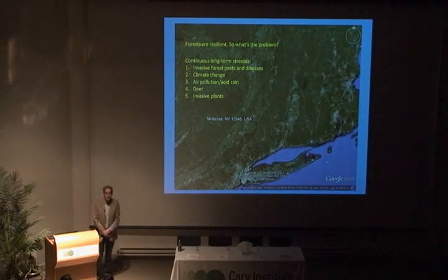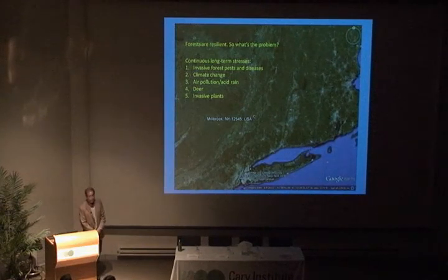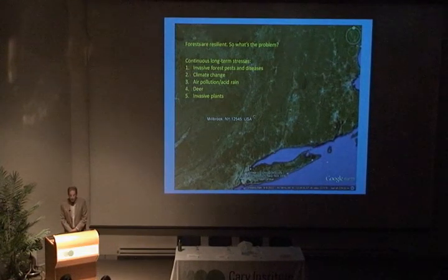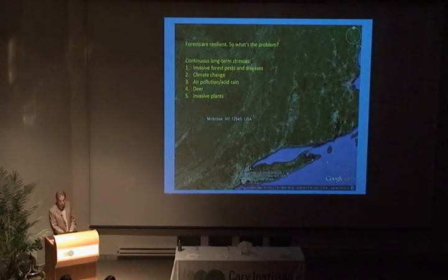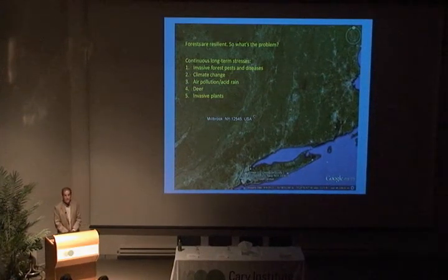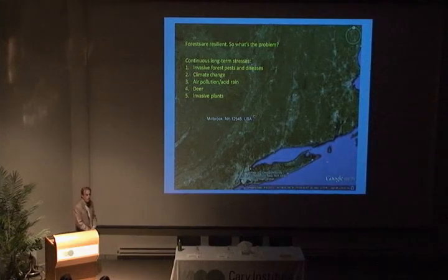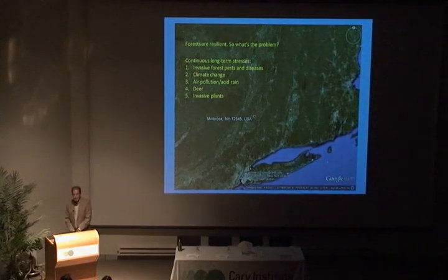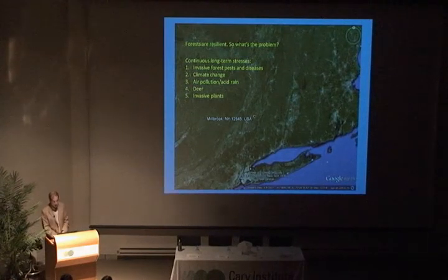We have pests and pathogens coming in, climate change happening, air pollution, overabundance of deer, and invasive plants. Those things interact. If you're trying to predict what the forest is going to be like in 50 years, I agree with Charlie — this is a zero-sum game in the canopy. You can guess that the forest is going to be green in 50 years, but to guess which species are going to be there is difficult.